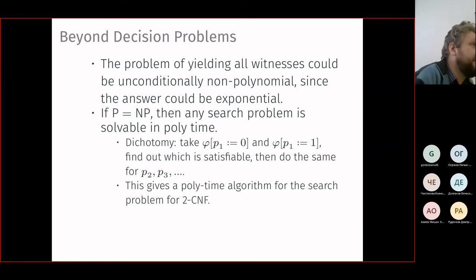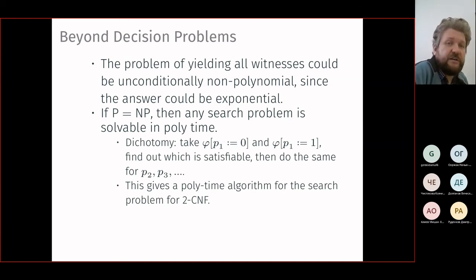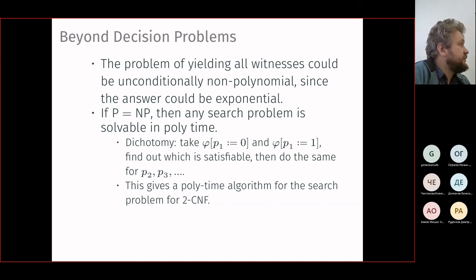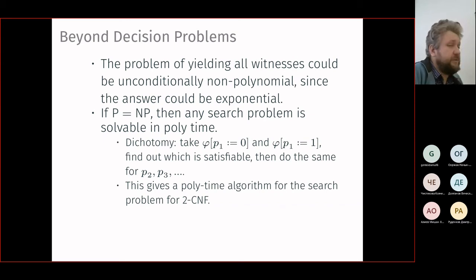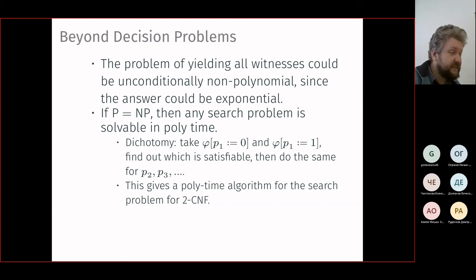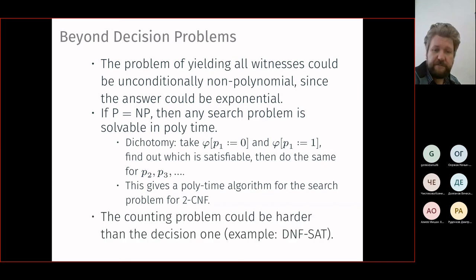For 2SAT, since the decision problem is polynomial, the search problem is also polynomial by the same dichotomy. You find whether 2-CNF is satisfiable, then set variables one by one. For the counting problem, however, the story differs. The counting problem for DNF-SAT is hard even though the decision problem for DNF-SAT is easy — you just find one satisfiable (non-contradictory) clause.